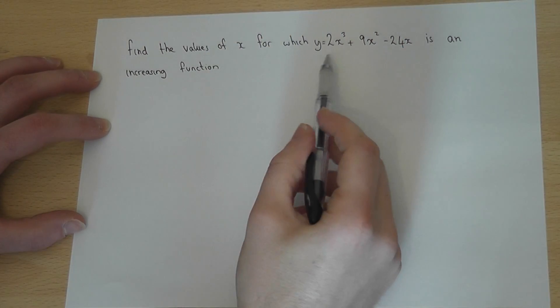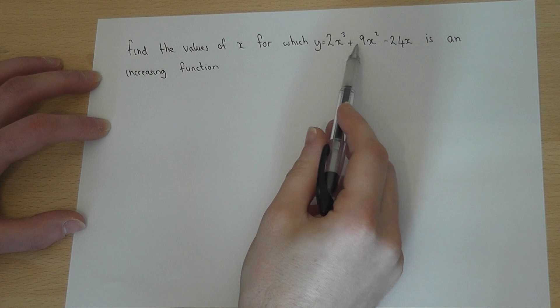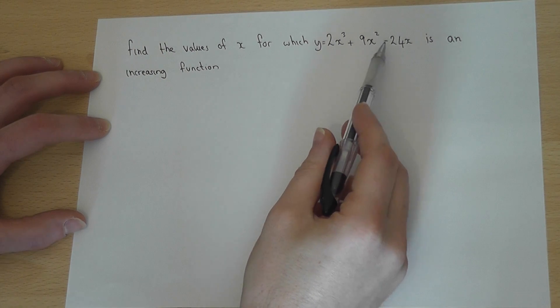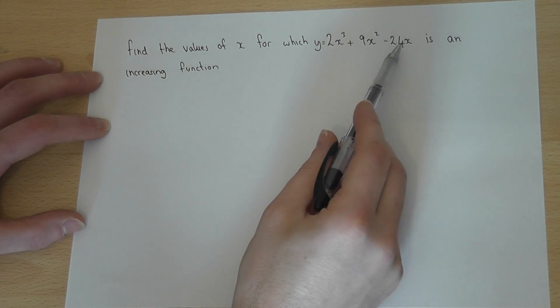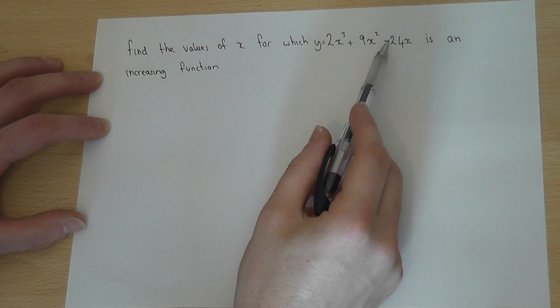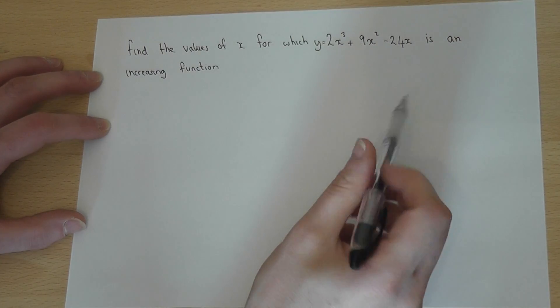In this video we're given a function y equals 2x cubed plus 9x squared minus 24x and we're asked to find for what values this is an increasing function.